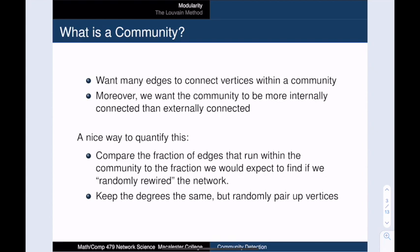A good baseline would be to compare our network to a randomly rewired network. This means that we keep all the vertex degrees the same, but recreate the edges by randomly pairing up vertices. And a fun fact, this is known as the configuration model, which we will talk about in our unit on random network models.